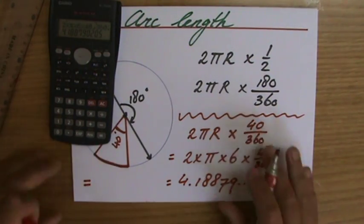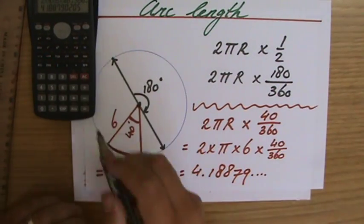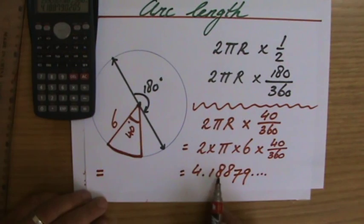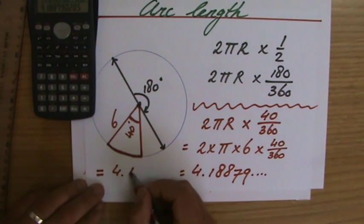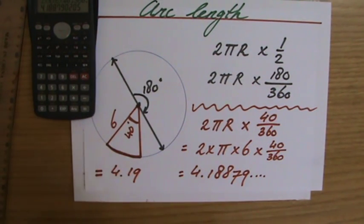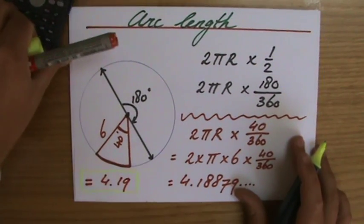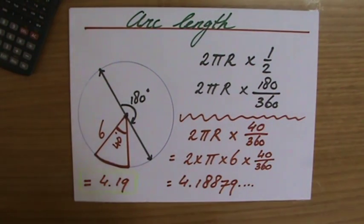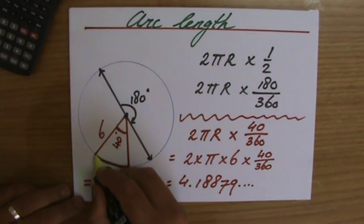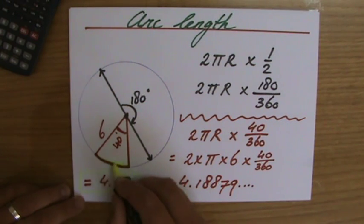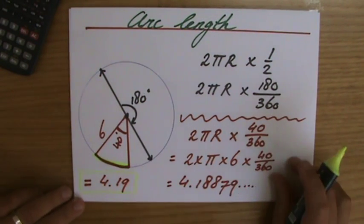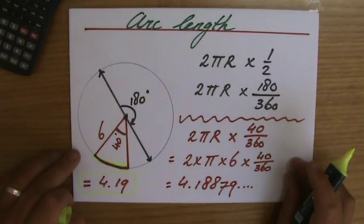So I'll do that over here, is 4.19 centimeters. So it looks a little bit messy, I apologize about that. So the answer is 4.19, which is the arc length, that part of the circle's circumference that you're interested in. That's the length of this one.